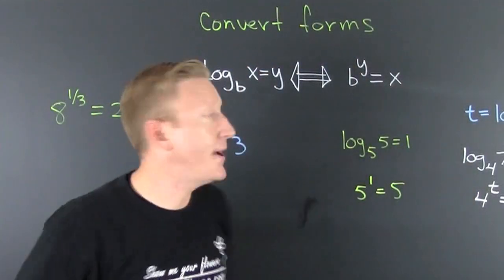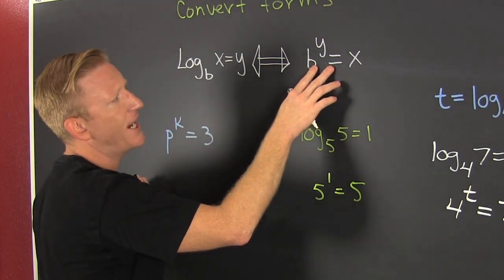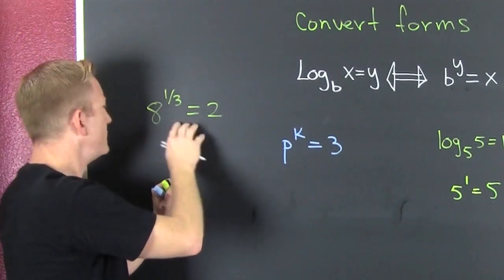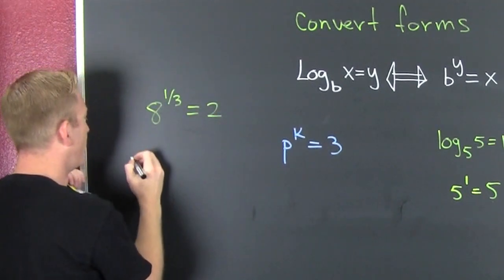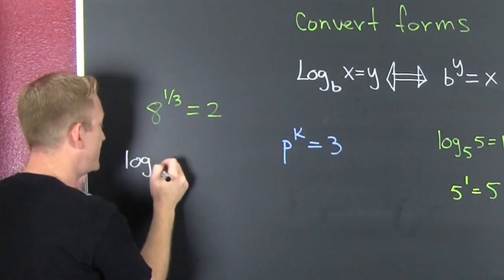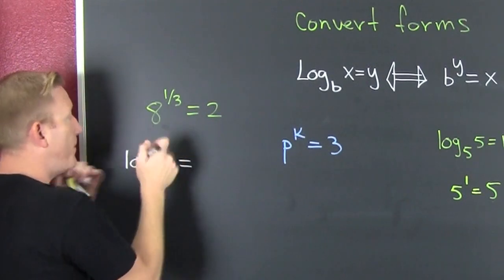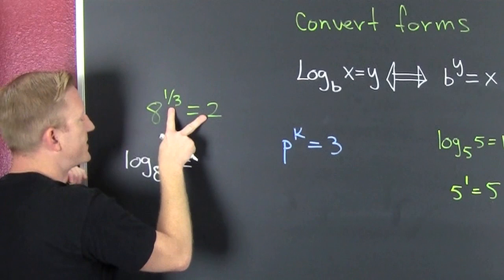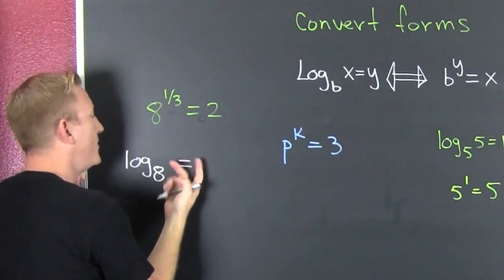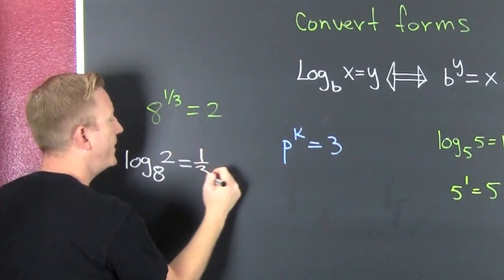Let's go backwards — from exponential to logarithm. As long as my base is on the left, I just go. So I'm looking at 8 to the 1/3 is 2. I go and I write: log — what's my base? My base doesn't change. My base is 8. Now I have my log on the left. So log base 8 of 2 is 1/3.